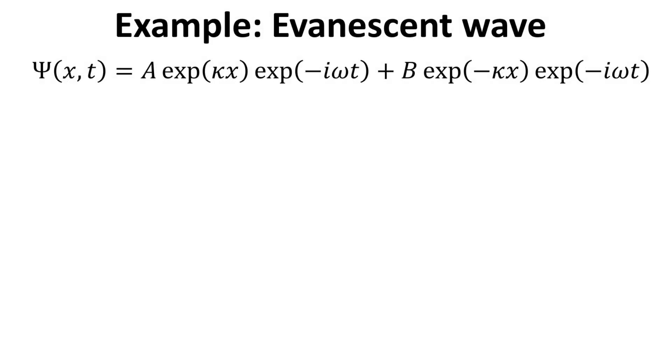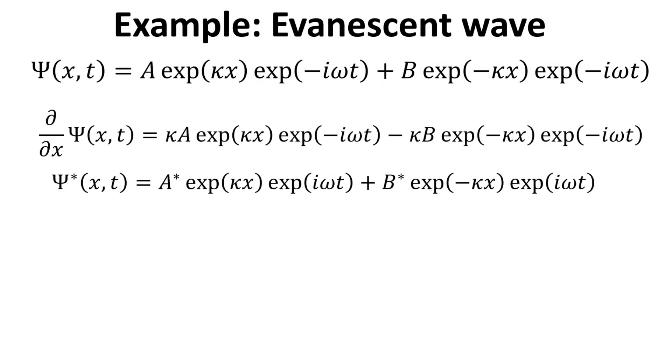Last example, let's look at an evanescent wave. We can find such evanescent wave within a tunneling barrier. The real wave vector kappa described the evanescent spatial decay length. It should be rather straightforward to work out its spatial derivative and complex conjugate as shown.